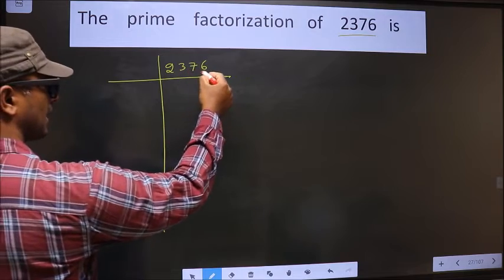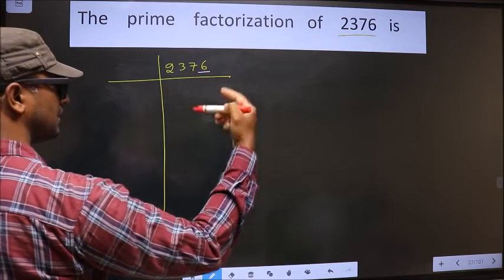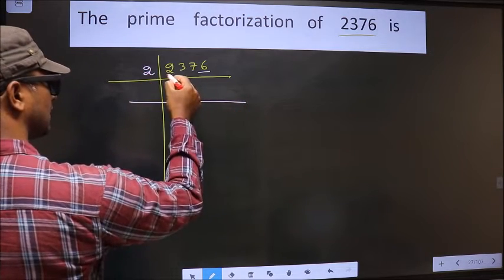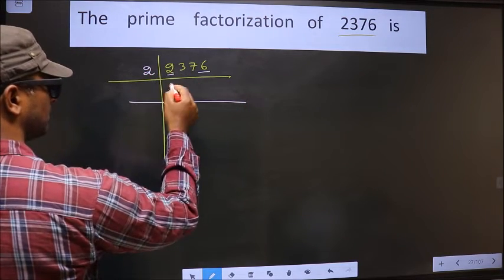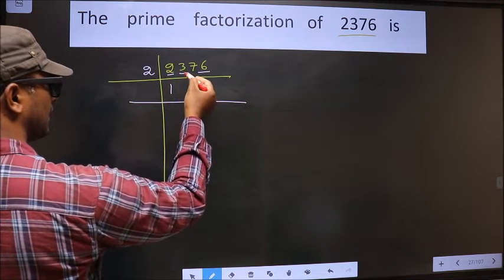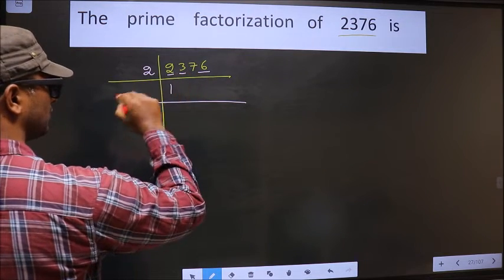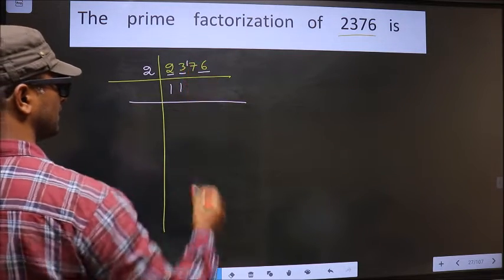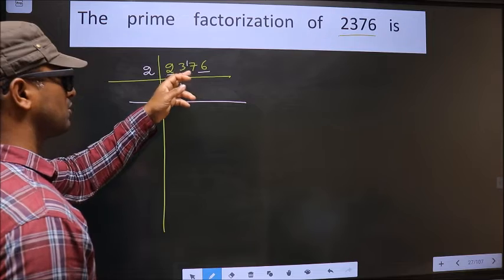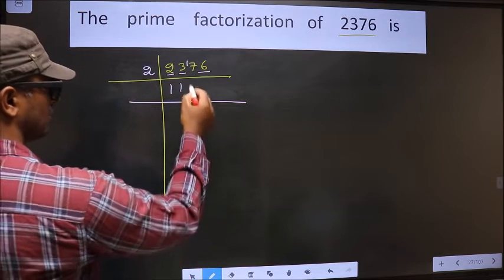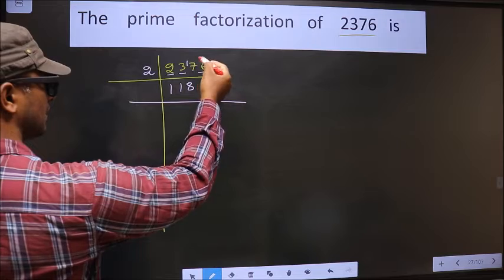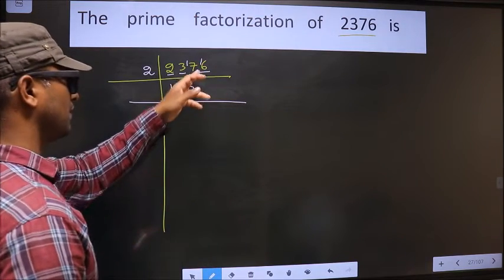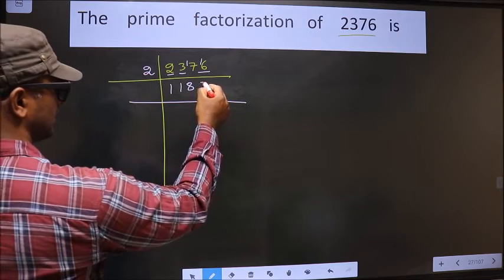For this number the last digit is 6, which is even, so we take 2 here. The first number is 2; when do we get 2 in the 2 table — 2 ones 2. The other number 3: a number close to 3 in the 2 table is 2 ones 2, so 3 minus 2 is 1, carried forward making it 17. A number close to 17 in the 2 table is 2×8=16; 17 minus 16 is 1, carried forward making it 16. When do we get 16 in the 2 table — 2×8=16.